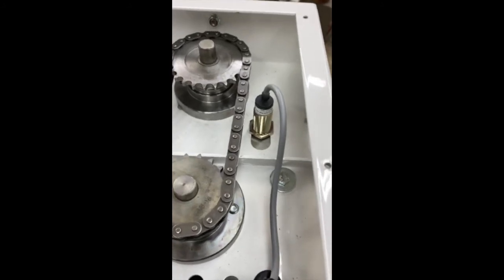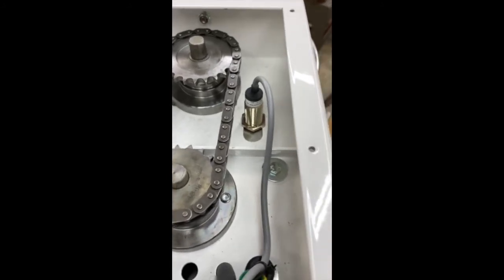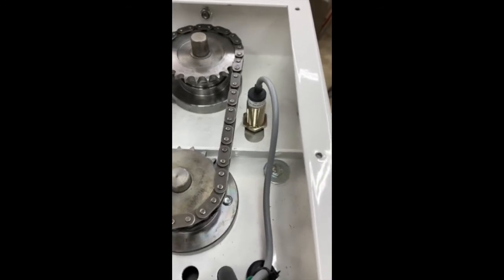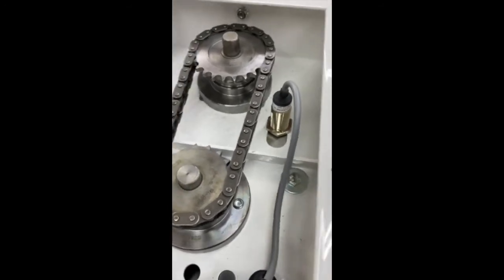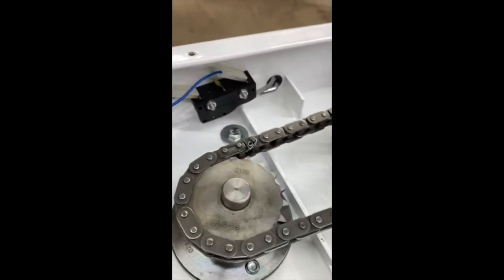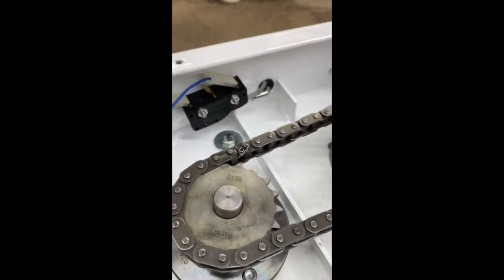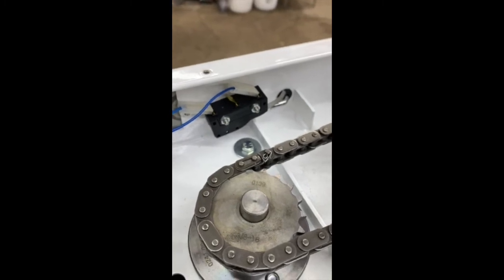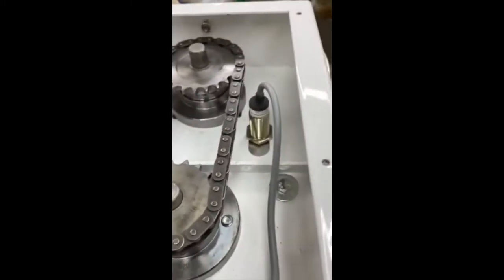If your mixer seems like it should be running and it just isn't coming on, there are two safety devices that could be keeping it from running. This is one of them. Another is the bowl guard safety switch over here that is covered in more detail in another video. So we're going to focus now on the bowl sensor.